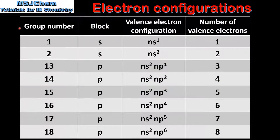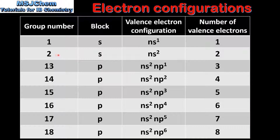Next we'll look at the block, the valence electron configuration, and the number of valence electrons for the main group elements — those in groups 1 and 2 and 13 to 18. Elements in group 1 are S block elements. They have the valence electron configuration ns1, where n is the highest occupied main energy level, and they have 1 valence electron. Elements in group 2 are also S block elements with valence electron configuration ns2 and 2 valence electrons.